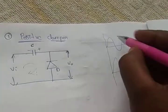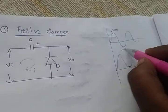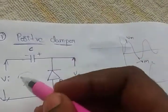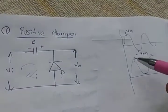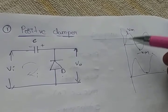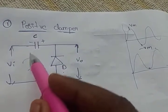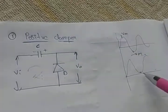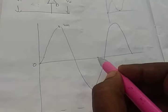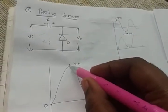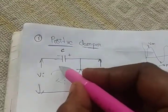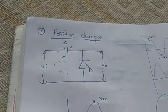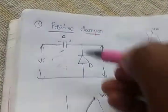Consider a sine wave having Vm as maximum and minus Vm as minimum voltage. We supply this to the capacitor. From 0 to Vm, we have a negative polarity at the diode, so there is no charging of the capacitor and therefore no output up to Vm.